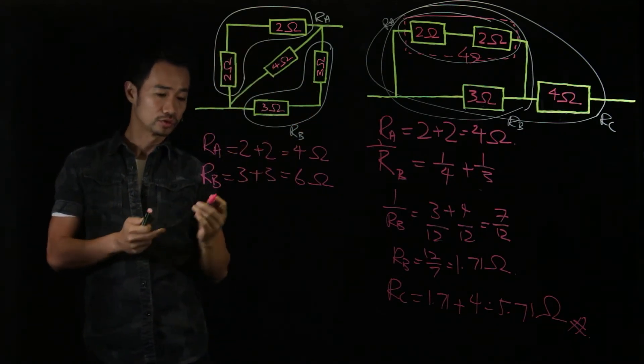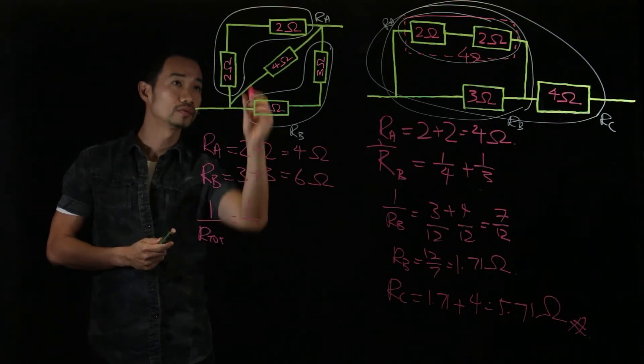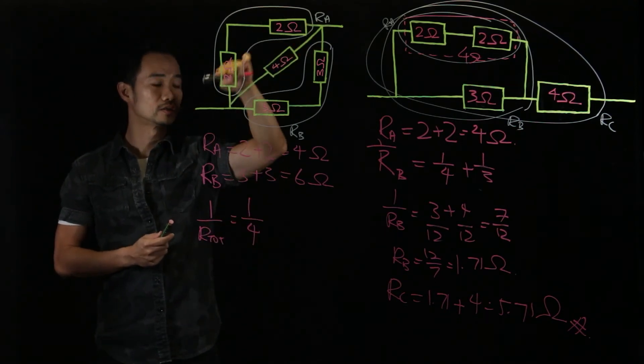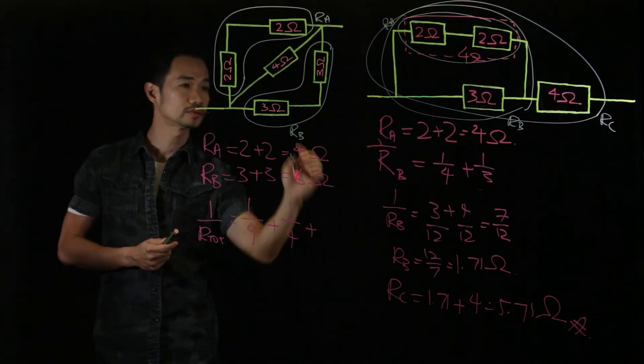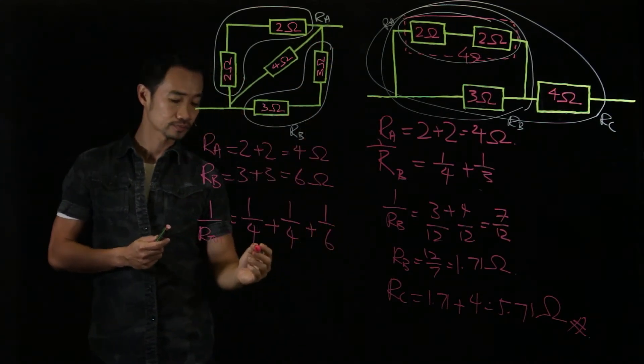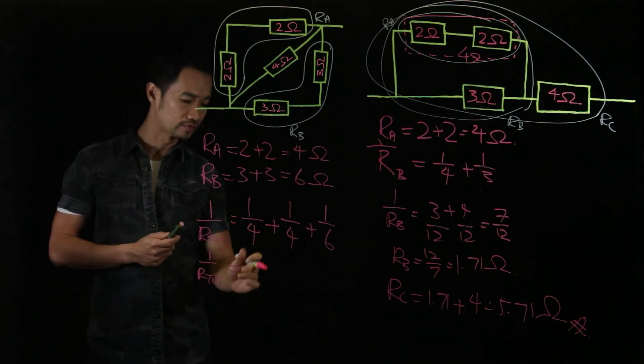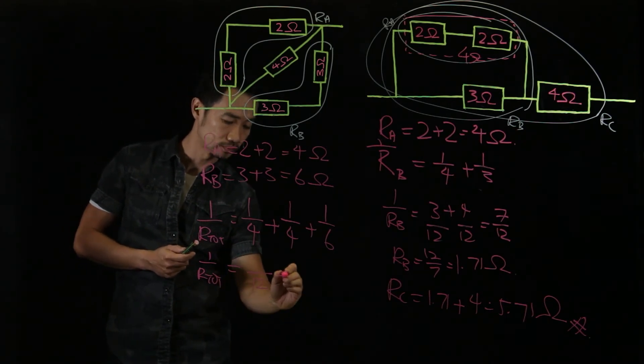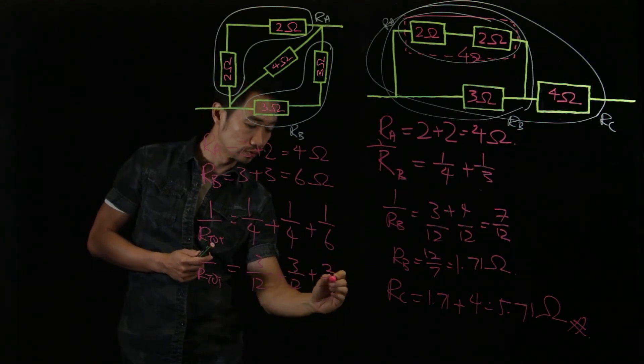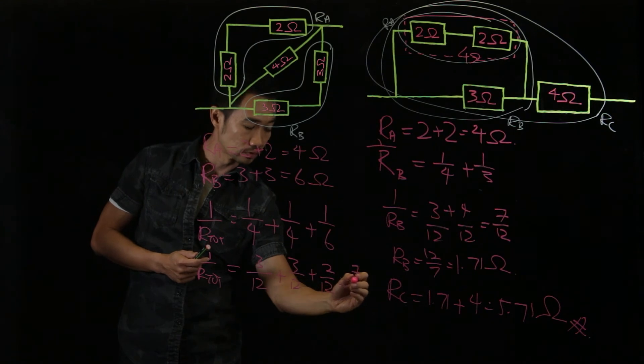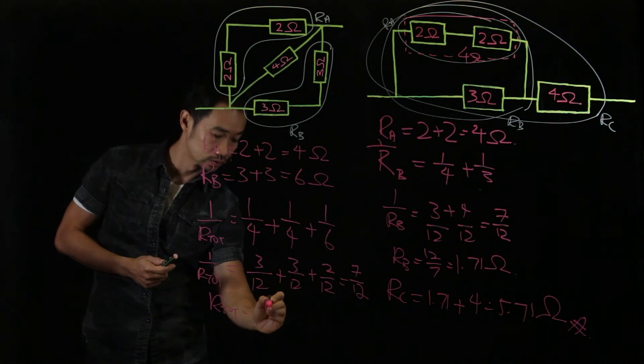So the final one, 1 over R total equals to 1 over 4. I got it from here, the composite. Plus this one. 1 over 4 plus 1 over 6. So 1 over R total. So in this case, common factor is 12 again. 12 plus 3, 3 over 12. Plus times 2, 2 over 12. So you will get 7 over 12. So R total is equal to 12 over 7.